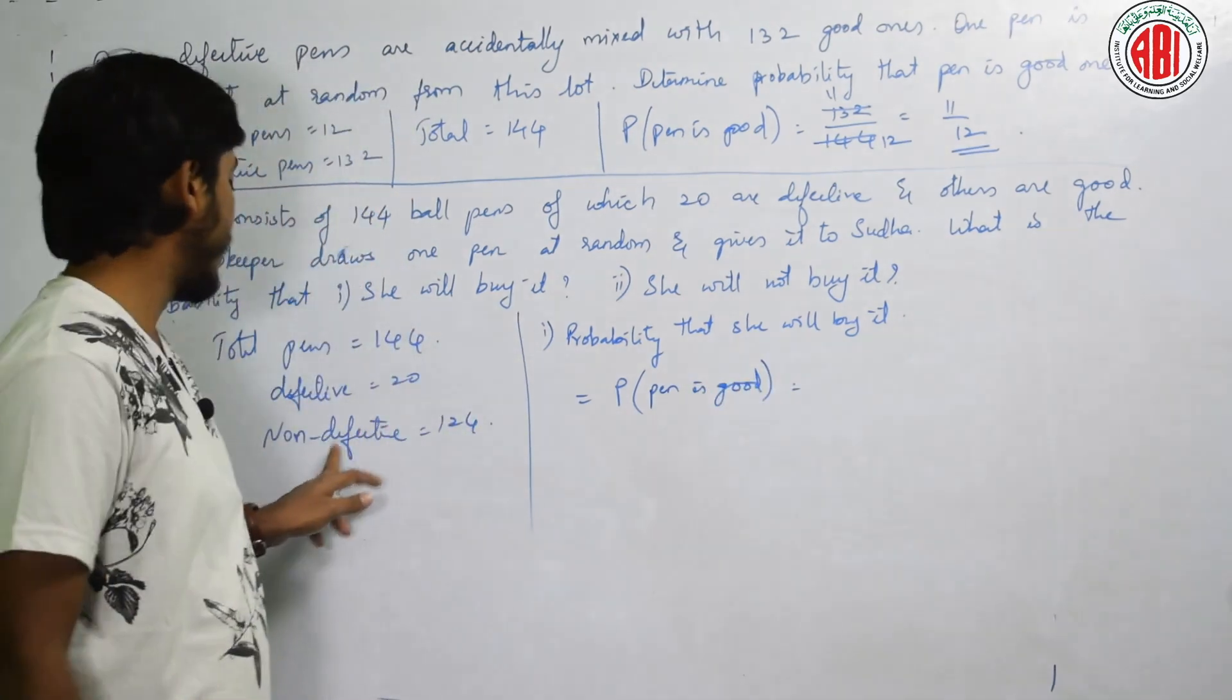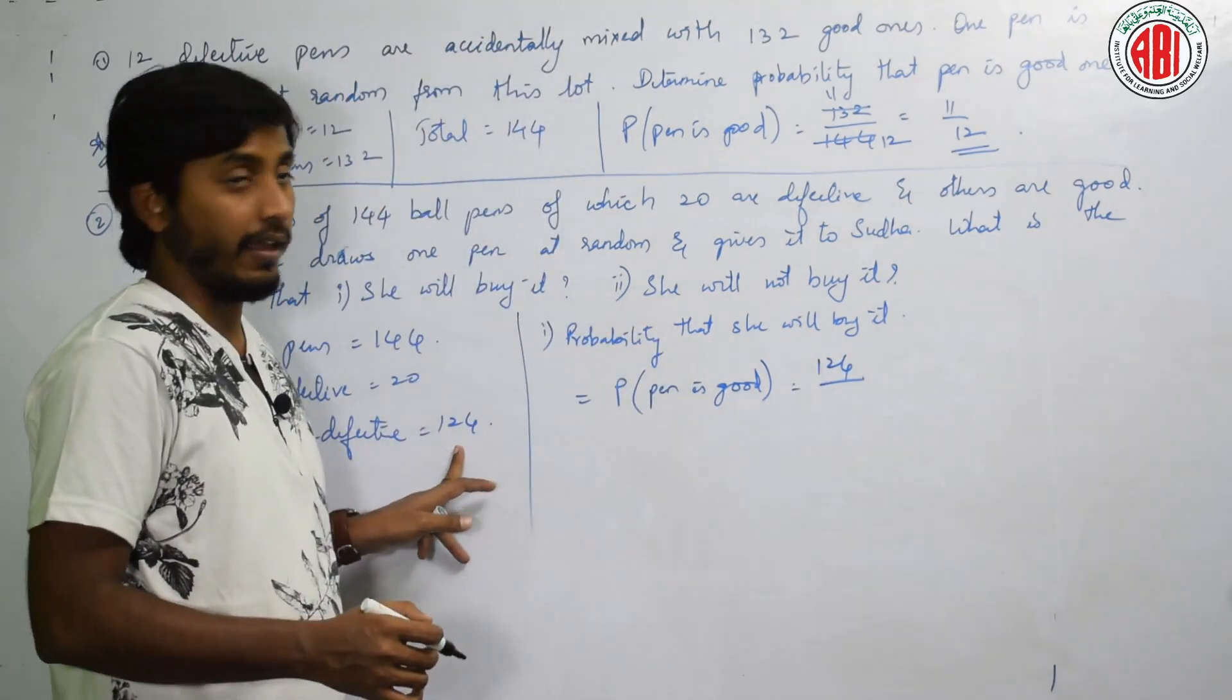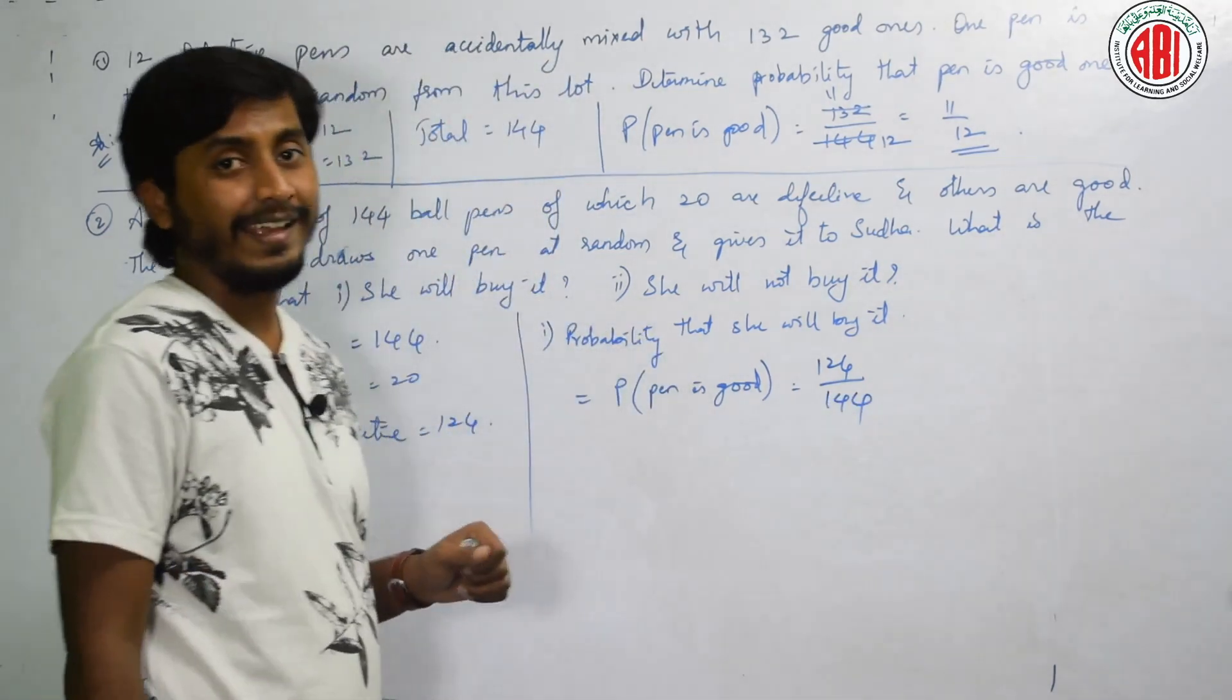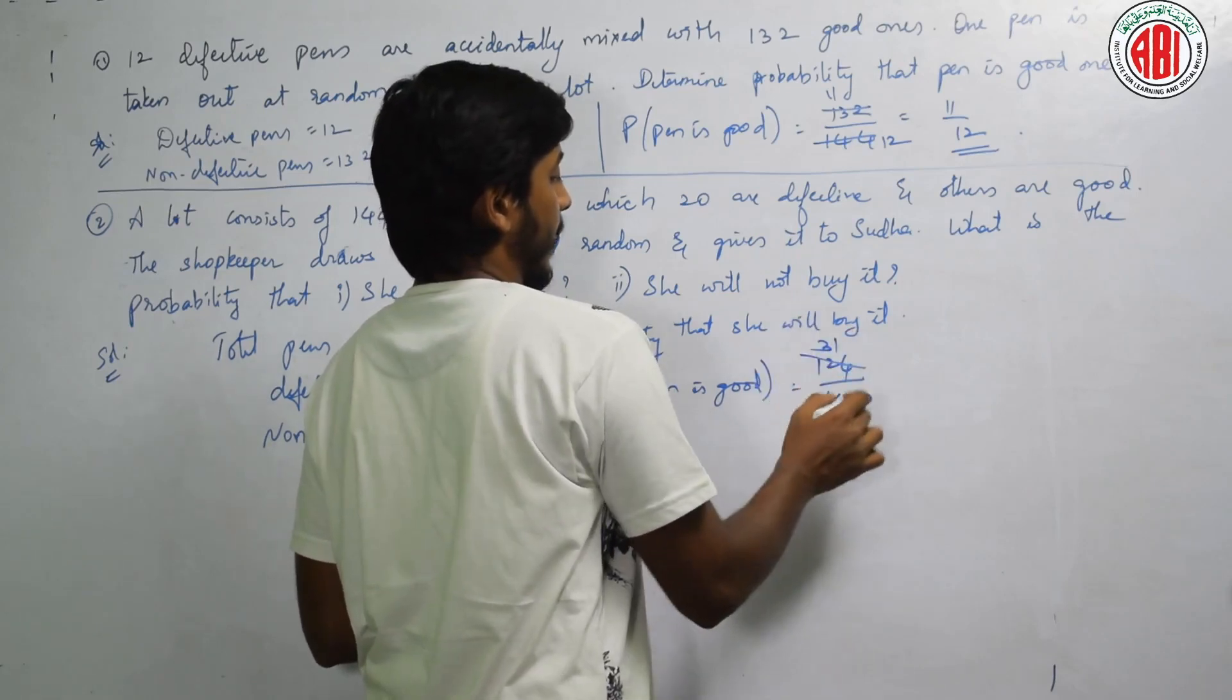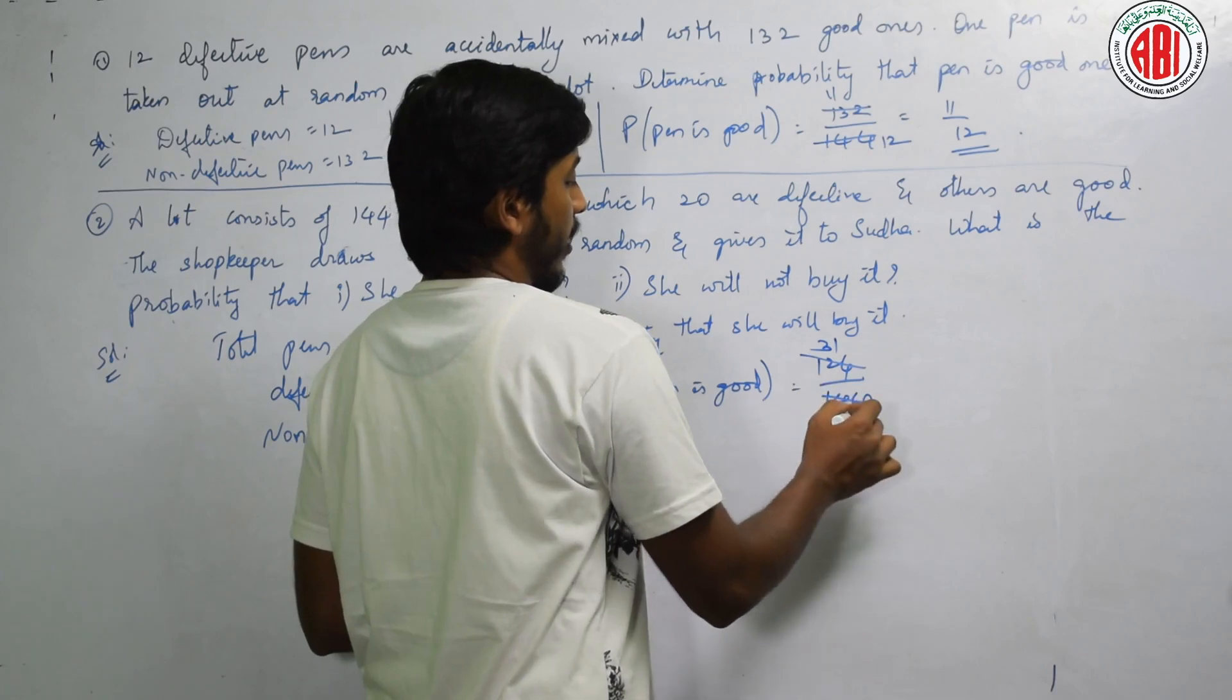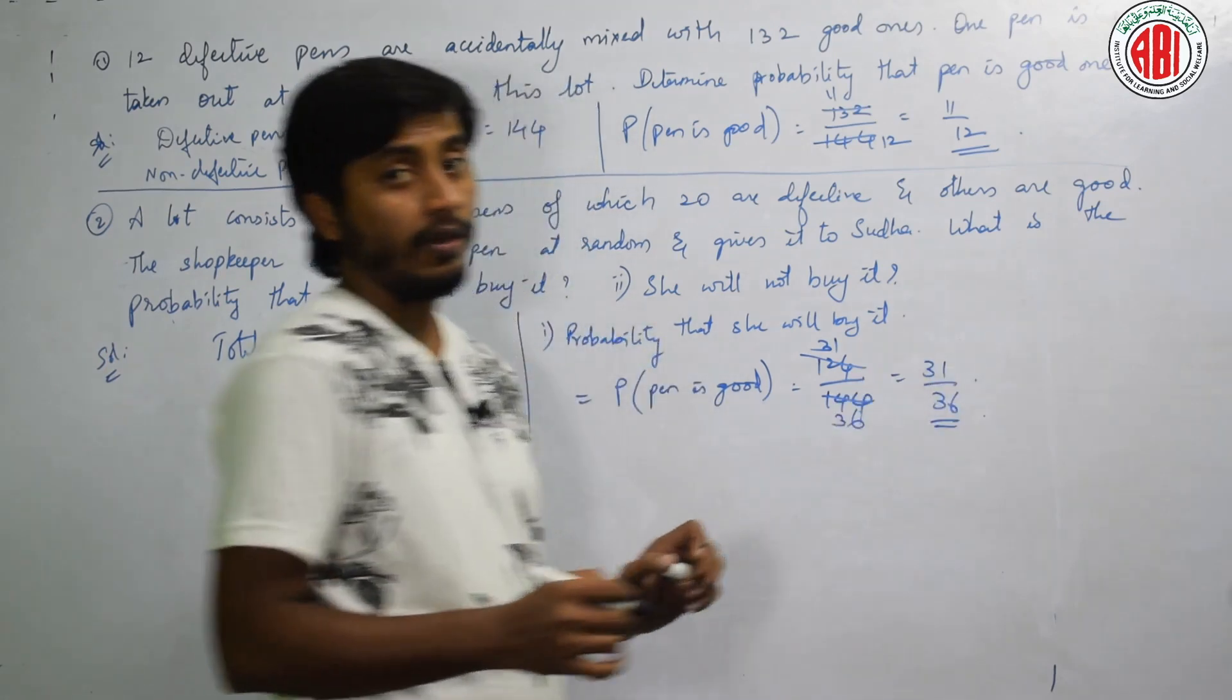Kitne pen se? Non-defective means 124 out of total 144. See here, either 4 threes is 12, 4 sixes is 24. That is, answer is 31 by 36.